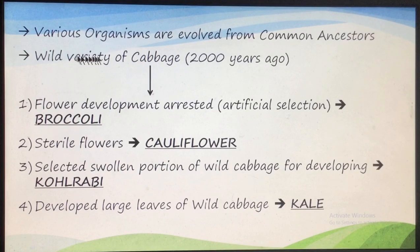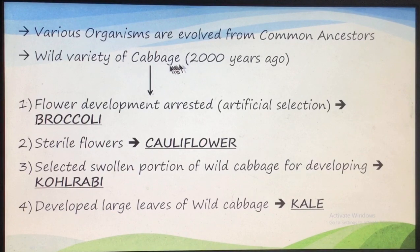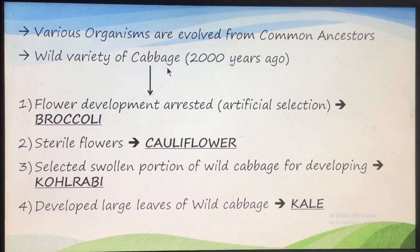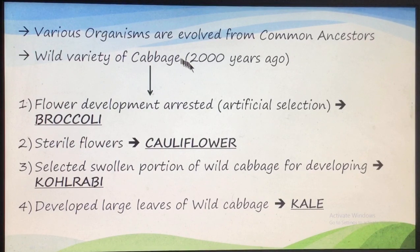From this wild variety of cabbage, the different varieties of vegetables were formed by the farmers by artificial selection. Remember, here there is artificial selection, but in nature it is natural selection, because the previous environmental conditions cannot be recreated. The wild variety of cabbage which the farmers were growing around 2,000 years ago gave rise to many different varieties.